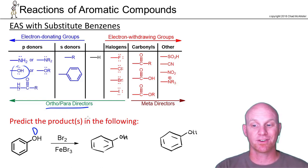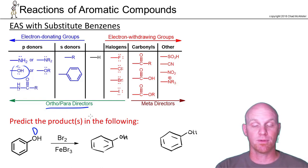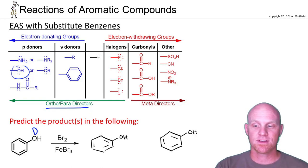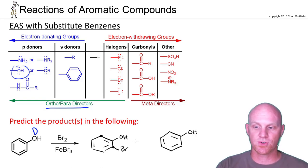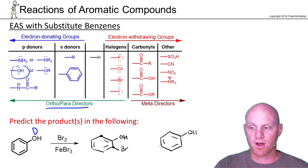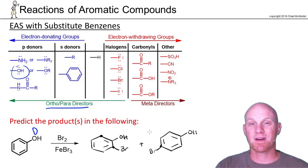When you've got an ortho-para director, unless there's some serious steric hindrance, generally you predict both ortho and para products. In this case, there are two ortho positions — this one and this one — and you can pick either one since the molecule is symmetrical and they're equivalent. There's the ortho product, and then there's one para position, giving a second product. You're expected to predict both of these products forming.